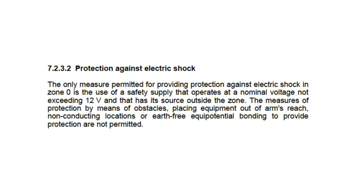Back to the codes. Clause 7.2.3.2 tells us that the only protection against electric shock in zone 0 is to ensure that the voltage is no higher than 12 volts. This means that no socket outlets providing 220 volts are allowed in zone 0 — it's a good thing that we're installing in zone 2.